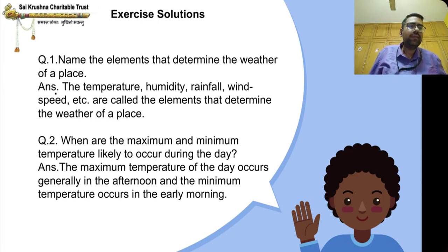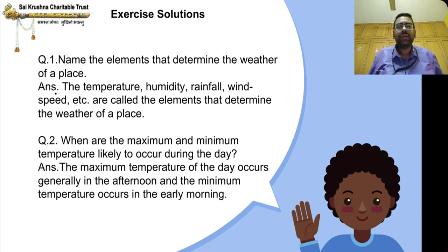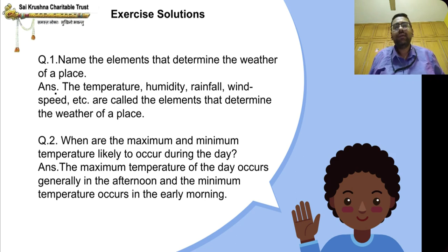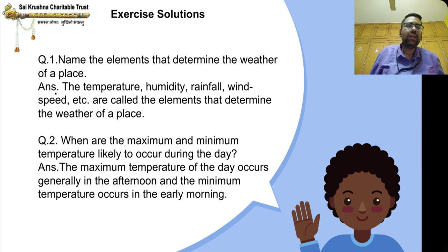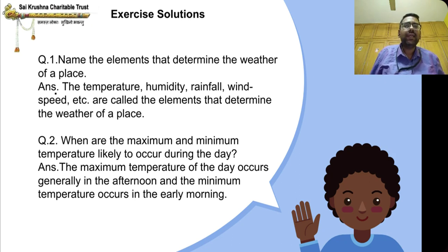In the previous videos I discussed what is weather in detail. The elements of weather are: temperature, humidity — which is the amount of water present in the atmosphere — rainfall, and wind speed. These are called the elements that determine the weather of a place.